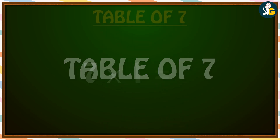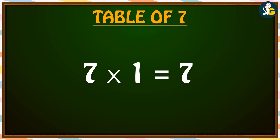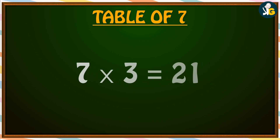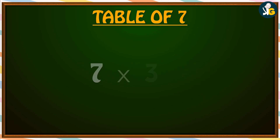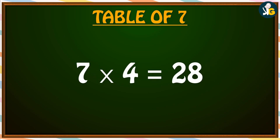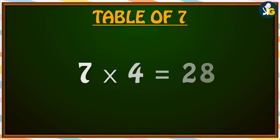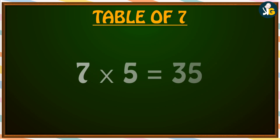7 times 1 is 7. 7 times 2 is 14. 7 times 3 is 21. 7 times 4 is 28. 7 times 5 is 35.